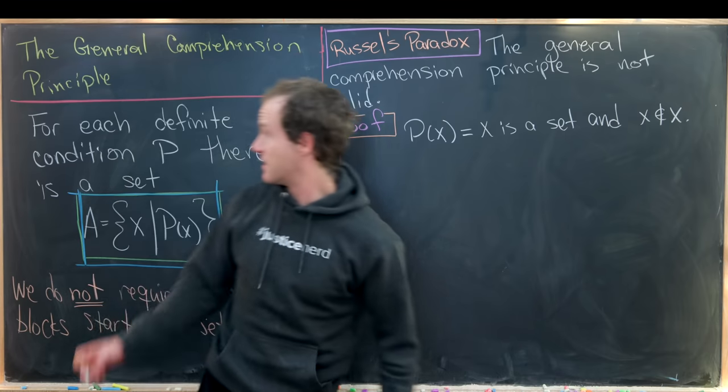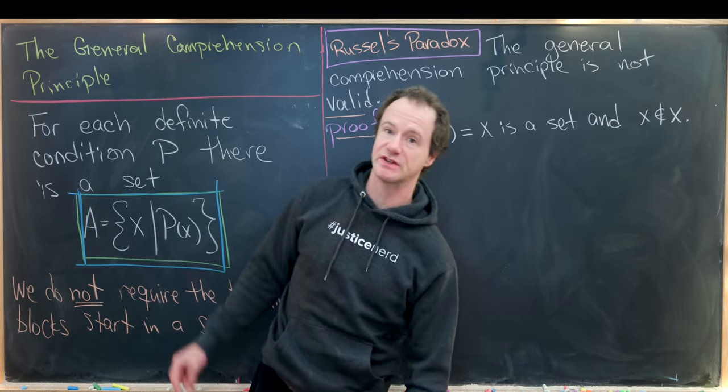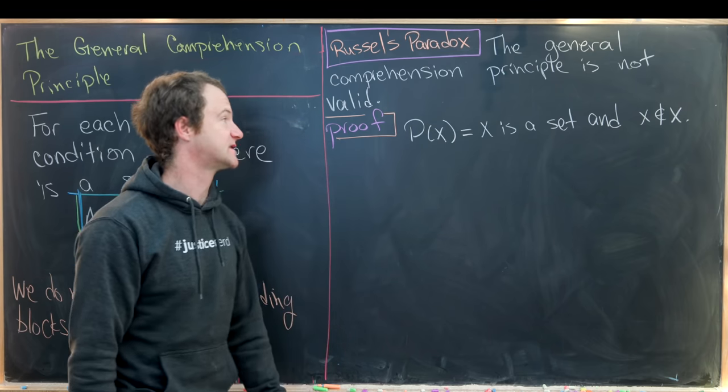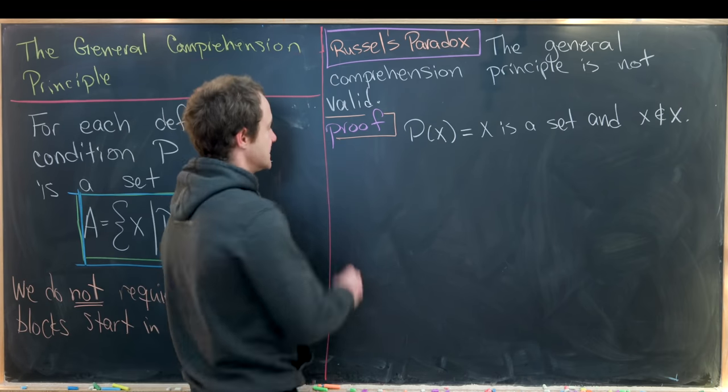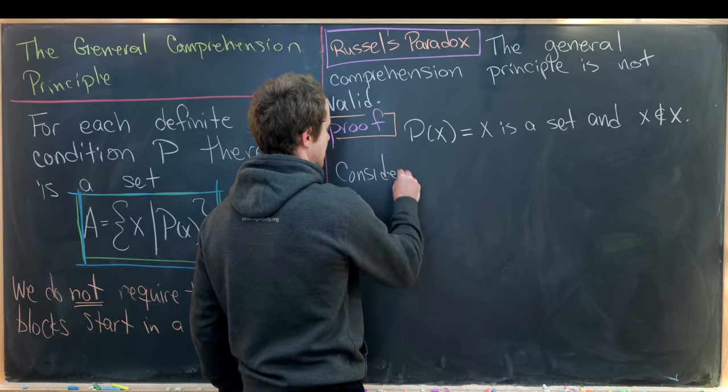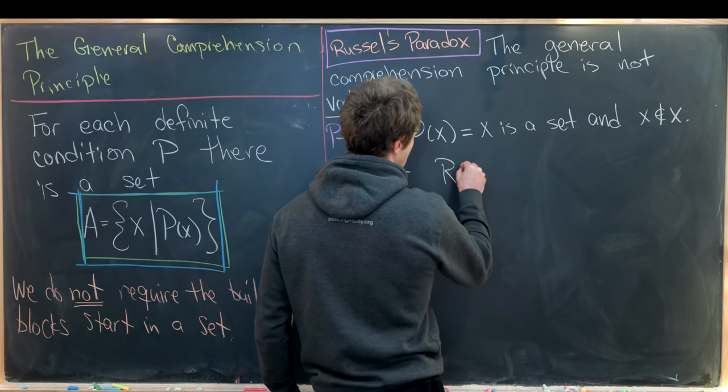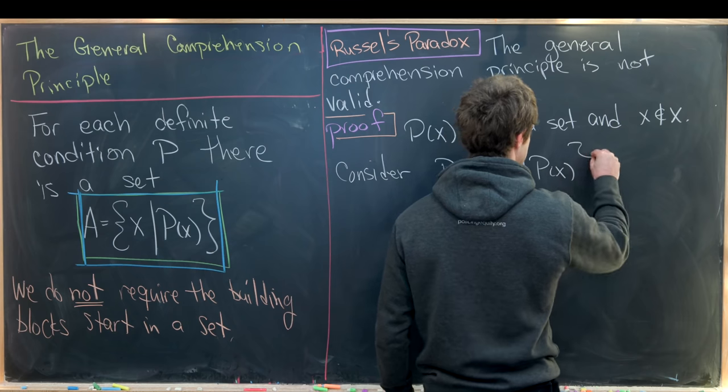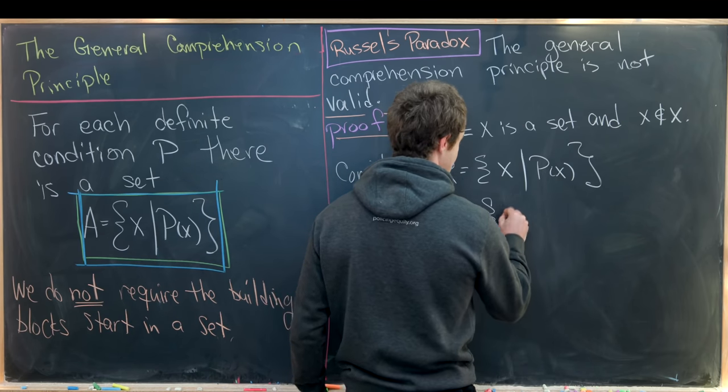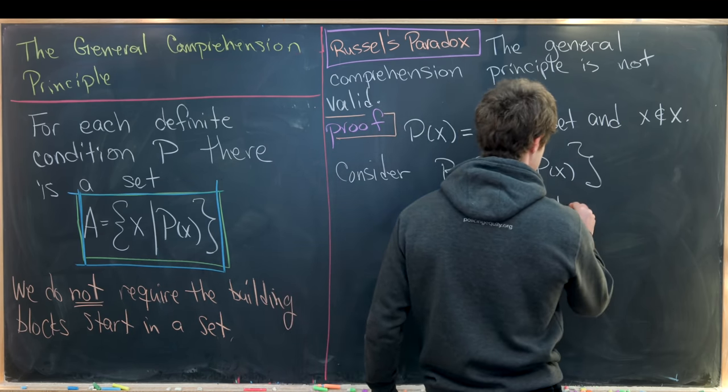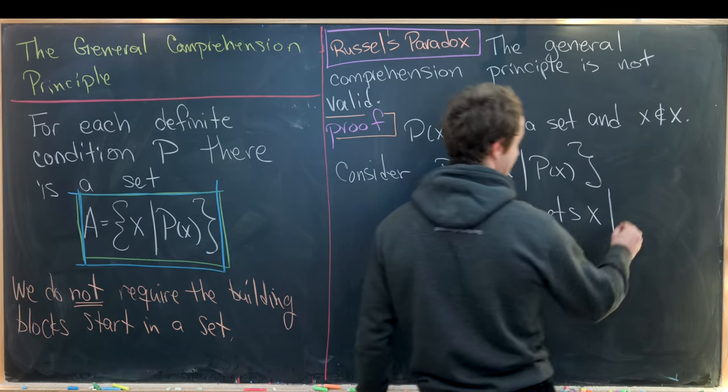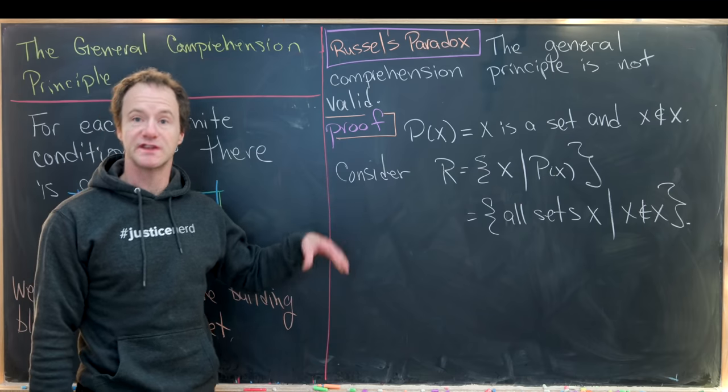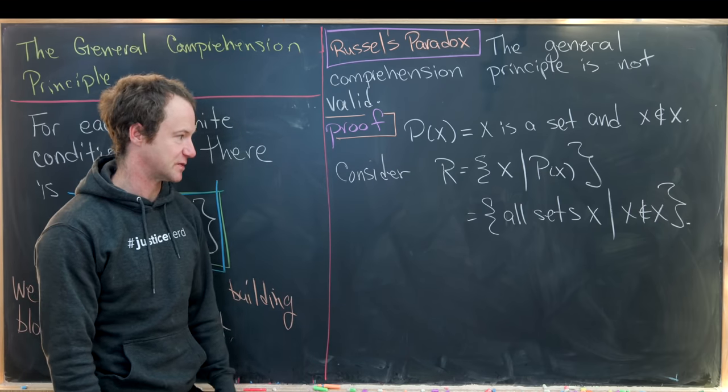So now let's suppose that the general comprehension principle is true and consider the set formed out of this definite condition. So let's maybe write it like this. We'll consider R which is equal to X such that P of X. So in other words, this is the set of all sets X such that X is not an element from X. And now we want to work towards a contradiction of this thing existing in the first place.